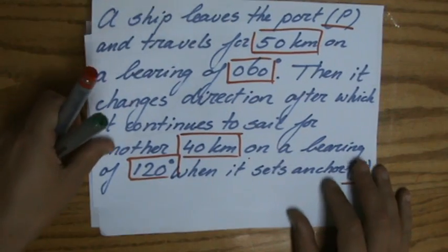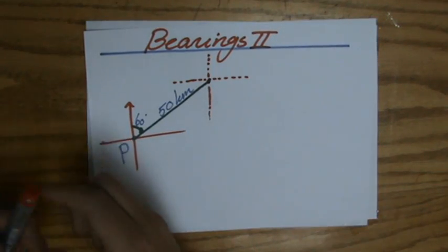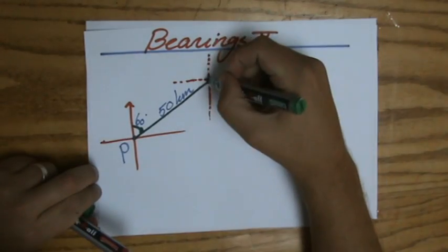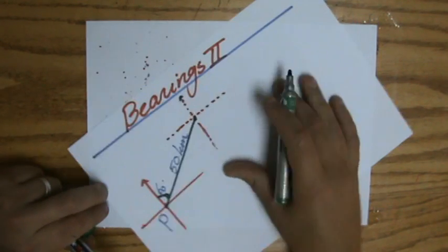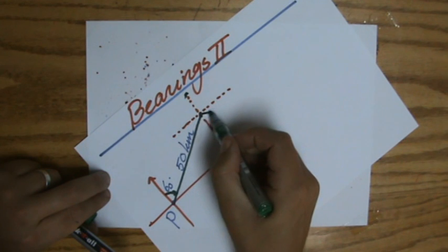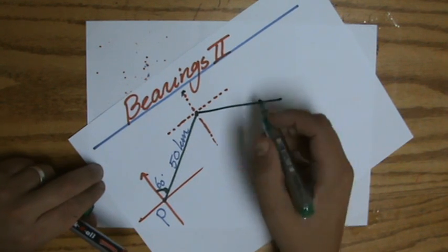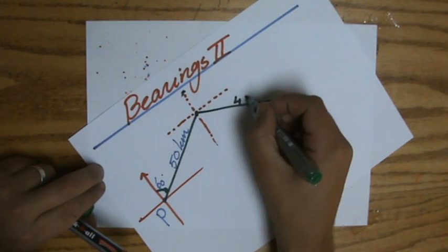That's the bearing for 40 kilometers. So 120 degrees. Start counting from the north, 120 degrees. So that's 90, and then he goes that direction. And that is 40 kilometers.